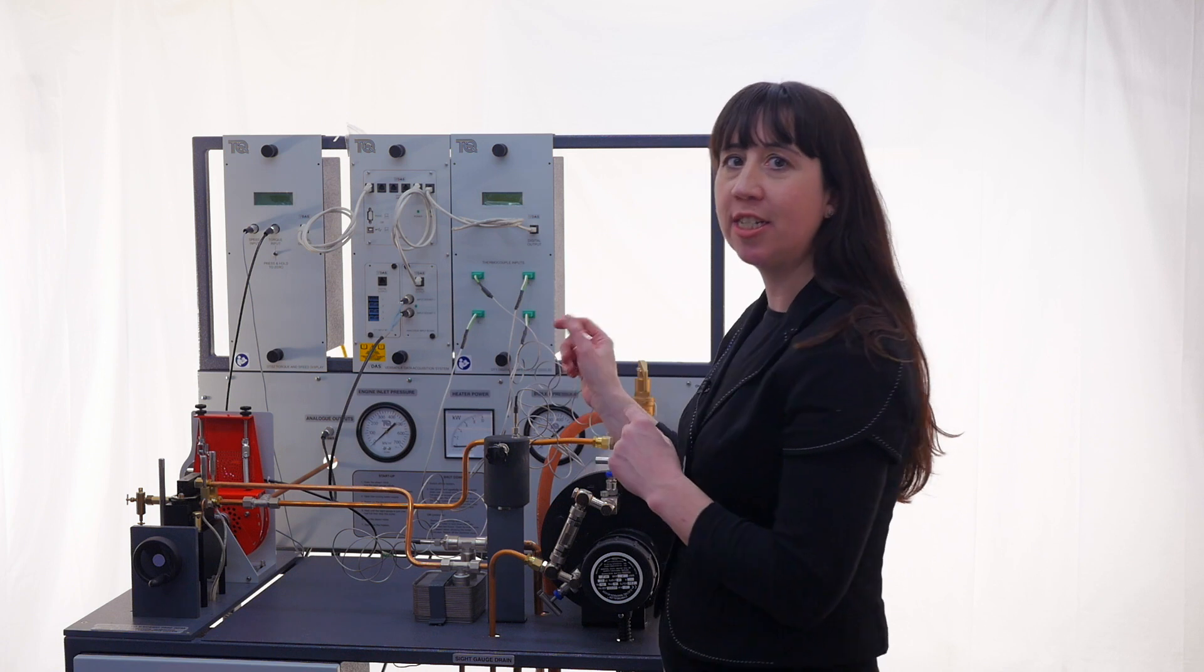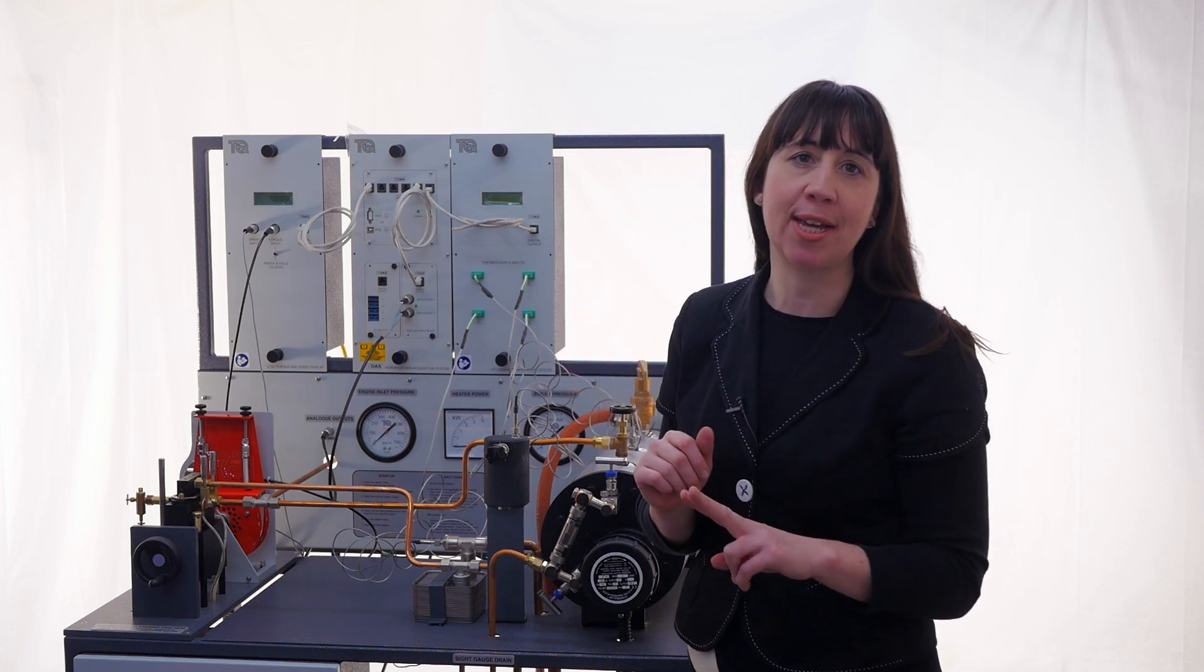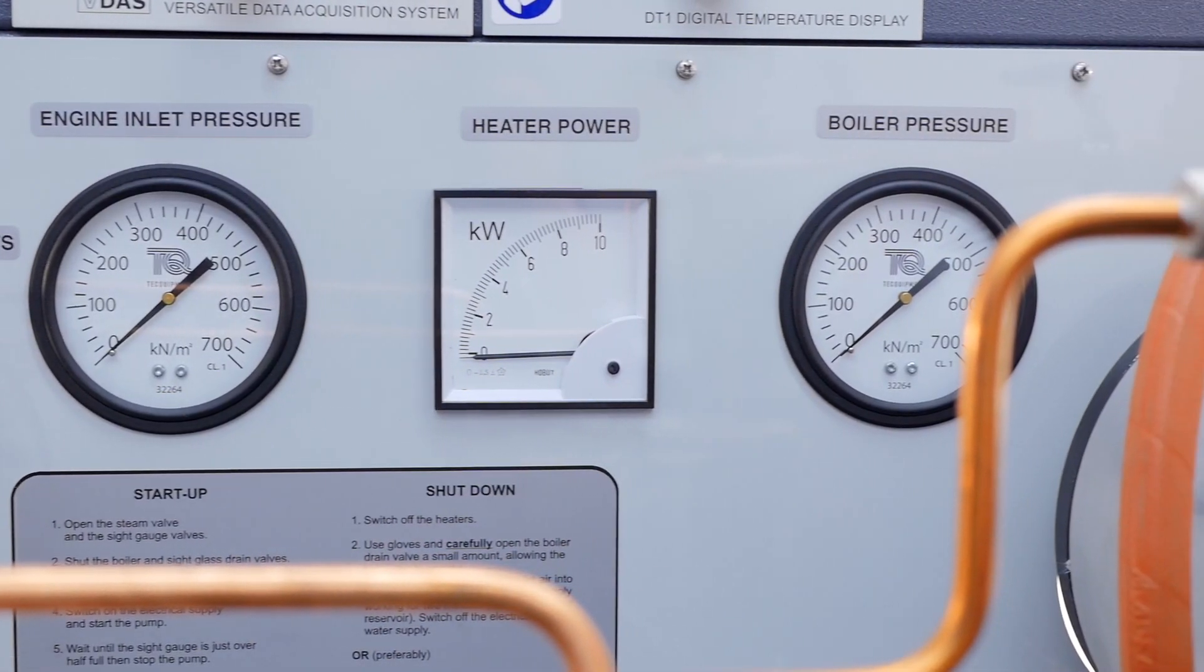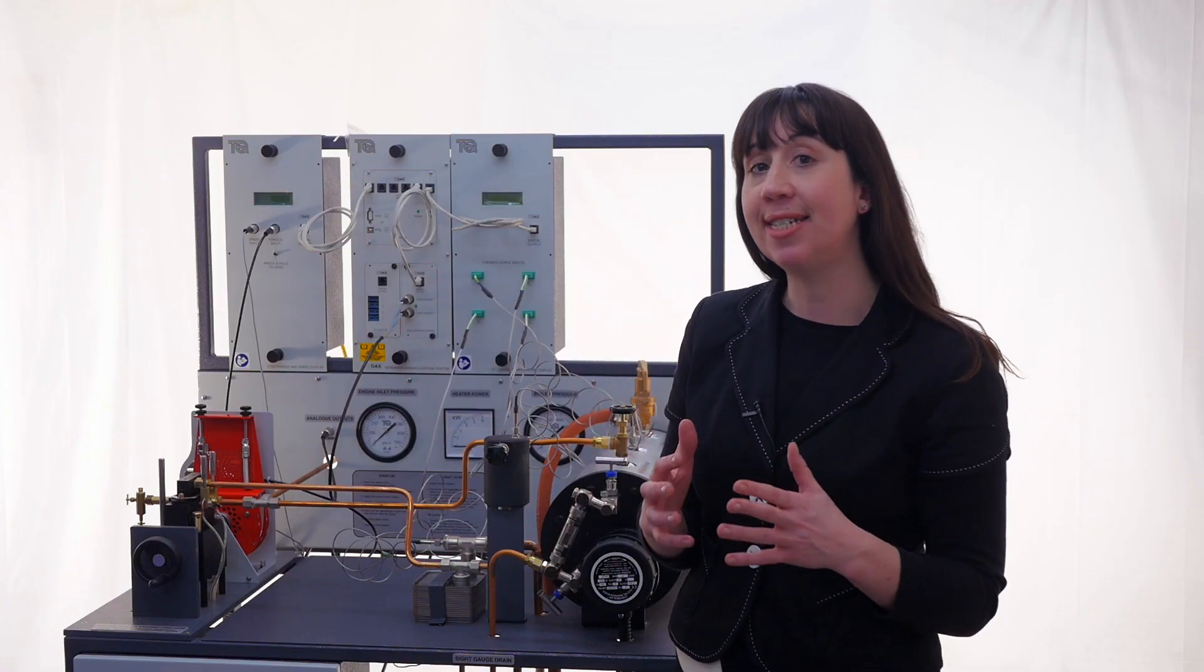At the back there is a watt meter to measure electrical power input to the boiler plus two board and pressure gauges to show the boiler and engine inlet pressures with each connecting to an electronic pressure sensor. All these connect to the VDAS socket for more advanced analysis.